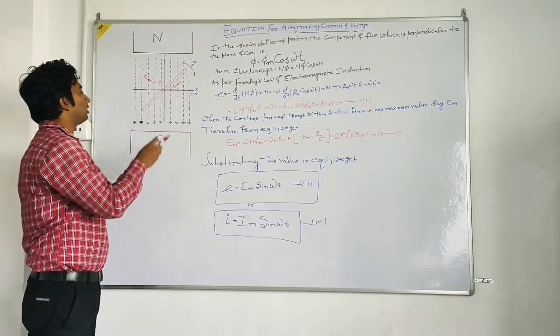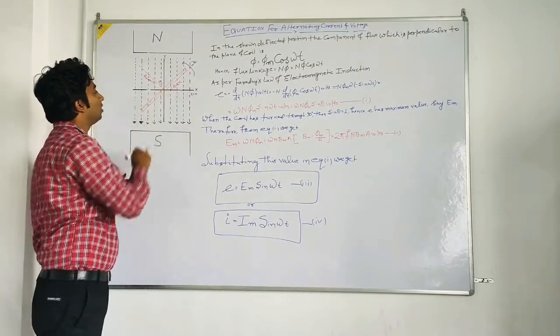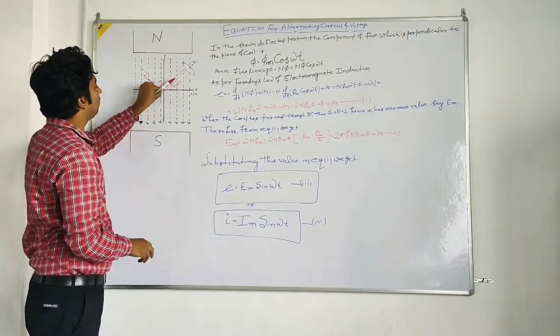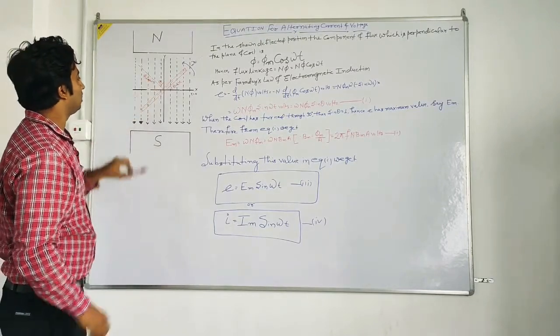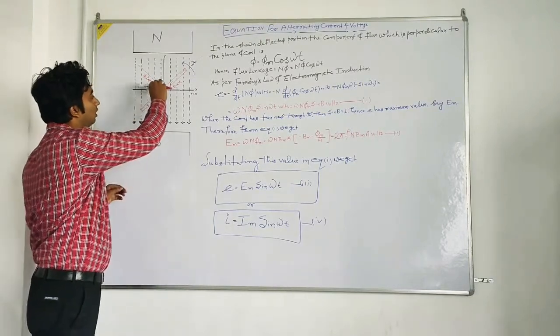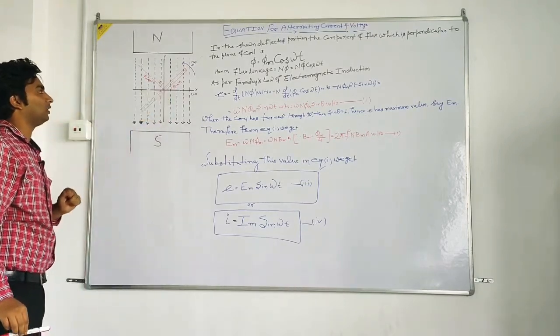So let us consider a rectangular conductor having n number of turns placed in this uniform magnetic field. So this conductor will experience the maximum flux linkage when this will be rotating in this position, means this will be parallel with the x axis.